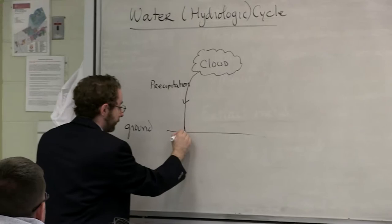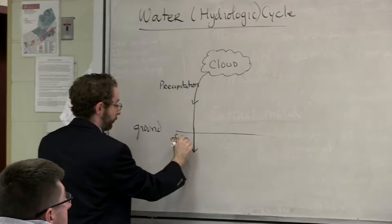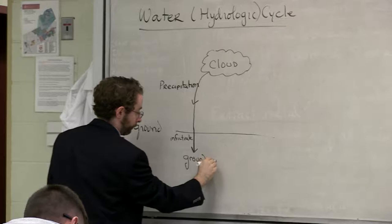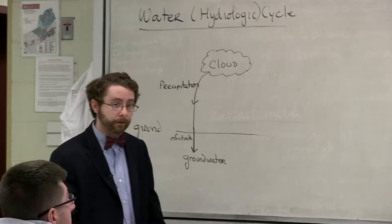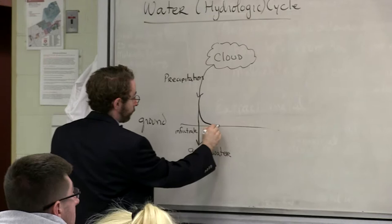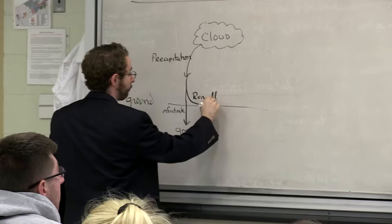One is that the water can infiltrate into the ground, and that's what gives you groundwater. The other possibility is when it hits the ground it's not going to infiltrate, and rather it's going to appear as runoff.